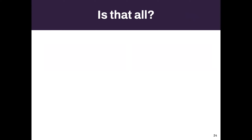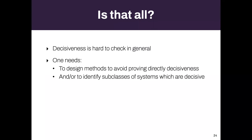So are we done? Of course not — it's hard to show decisiveness in general. What we decided to do is design methods to avoid proving decisiveness, which is too hard, and instead identify subclasses of systems that are decisive for free. If you can model your system in one of these classes, the approximation scheme is guaranteed to be correct.